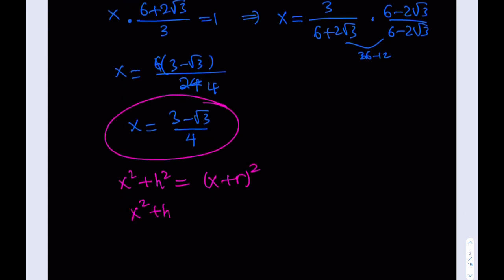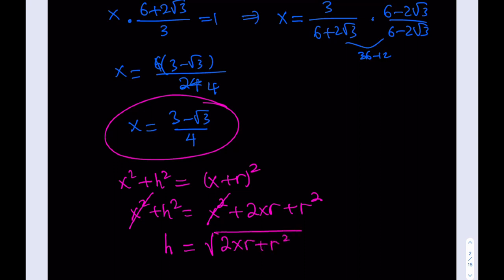By the Pythagorean theorem: X² + H² = (X + R)². Expanding the right side: X² + H² = X² + 2XR + R². The X² terms cancel, leaving H² = 2XR + R², so H = √(2XR + R²). I do know the value of X, but if I plug it in right now I'll have to deal with radicals inside radicals, so let's wait until the end.